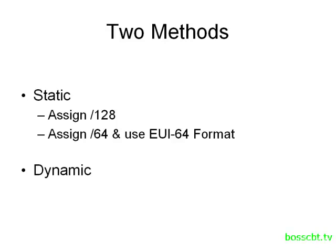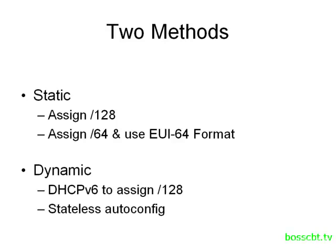The dynamic approach also has two ways to go about it. We can use DHCP version 6 to assign an entire slash 128 to a host, or we could use something known as stateless autoconfig. We'll get into the details on the dynamic approach in the other tutorial. For now, let's take a look at how we assign a slash 128 to a host.